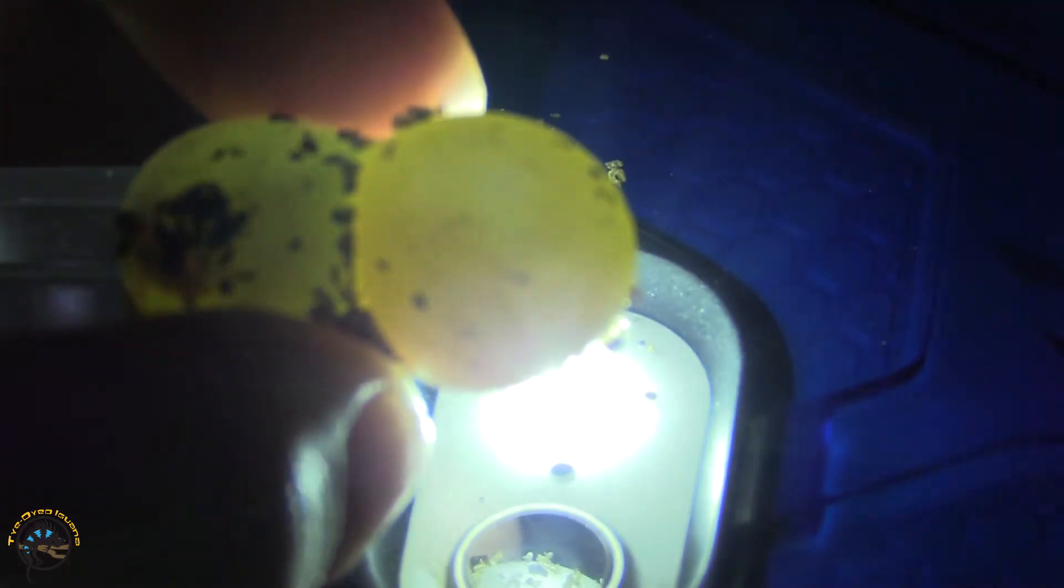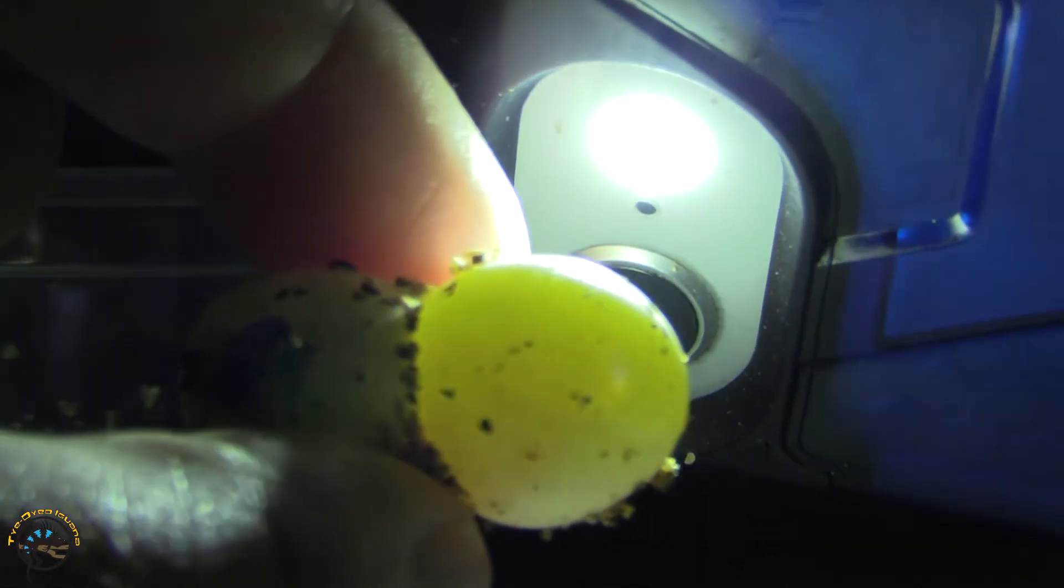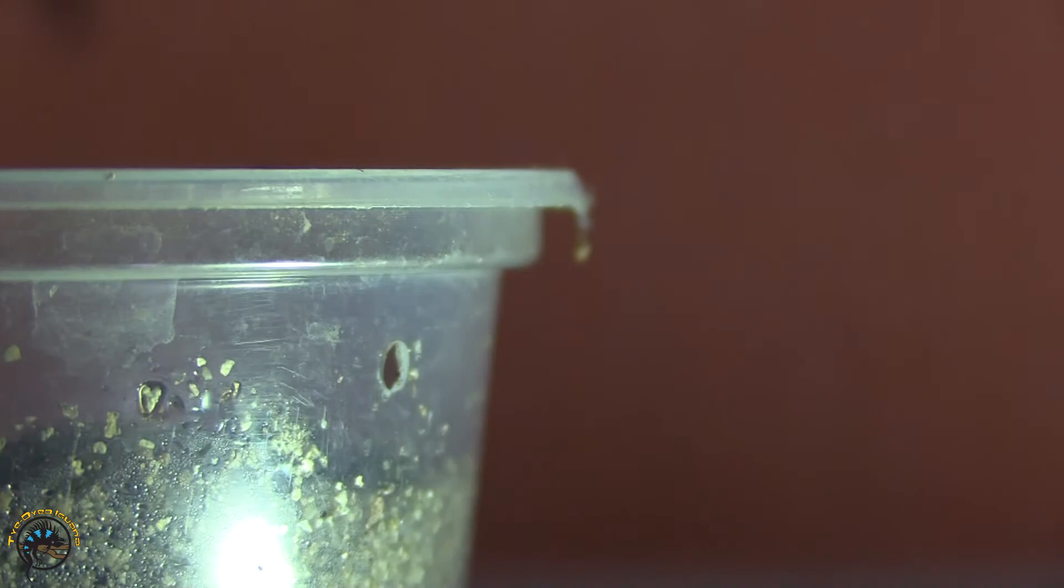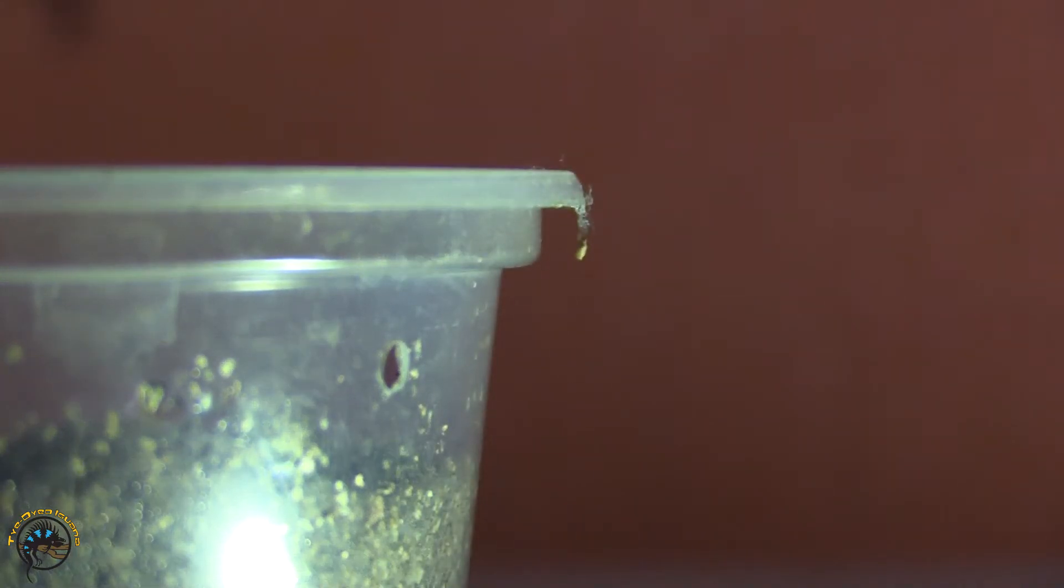Yeah, if you can see, I'm shining the light through. And I am not seeing anything in these eggs, unfortunately. Usually when they're yellow and you don't see any kind of pink spot on them at all, that usually means they're infertile. And they stink too, so I think those are bad.